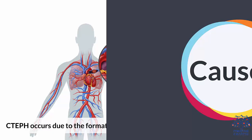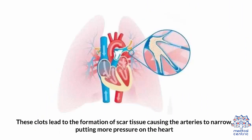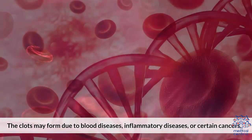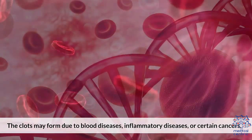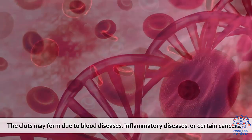Causes: CTEPH occurs due to the formation of blood clots in the pulmonary arteries. These clots lead to the formation of scar tissue, causing the arteries to narrow, putting more pressure on the heart. The clots may form due to blood diseases, inflammatory diseases, or certain cancers.